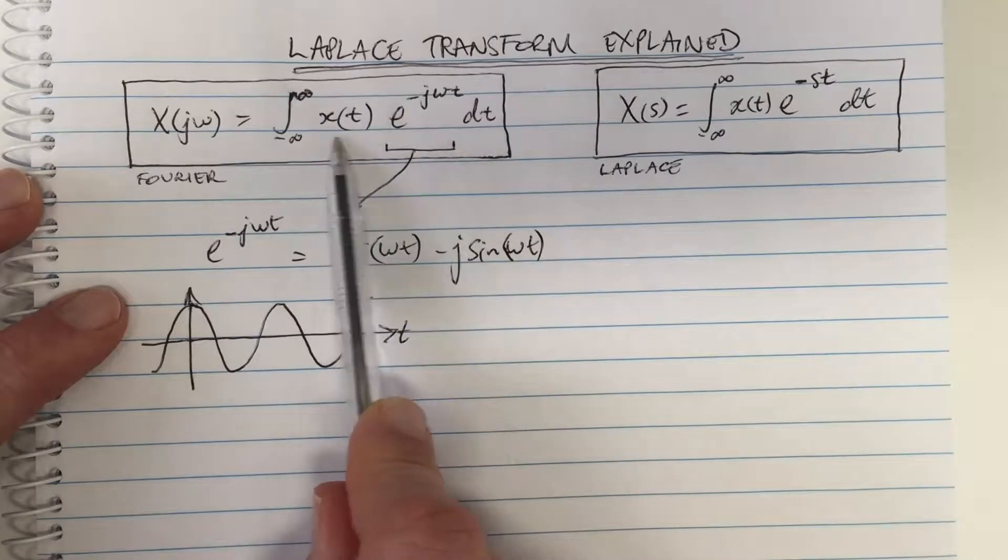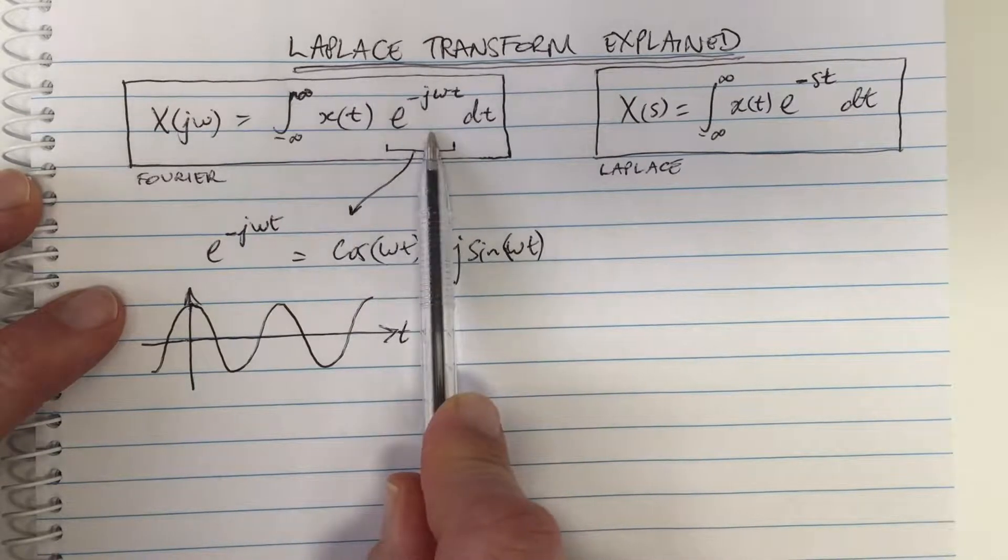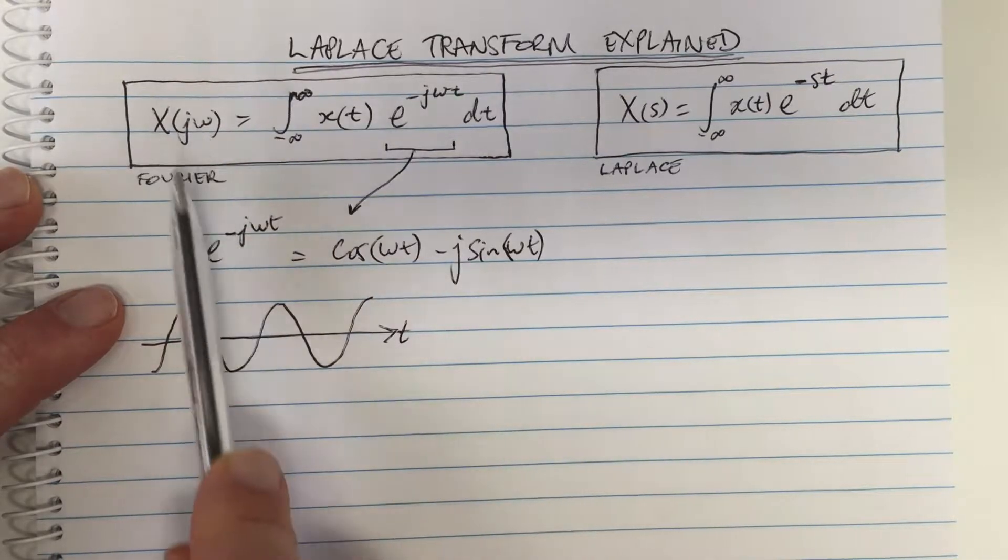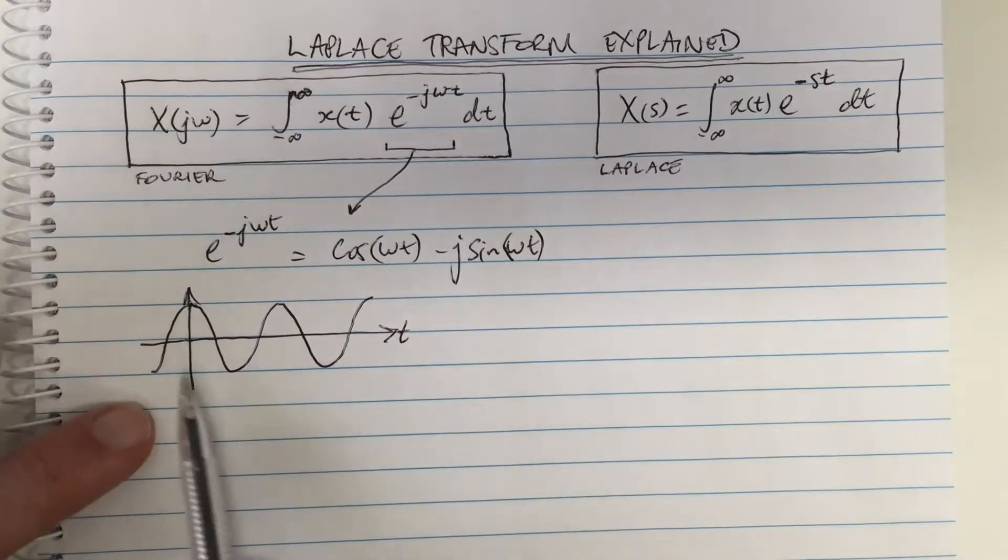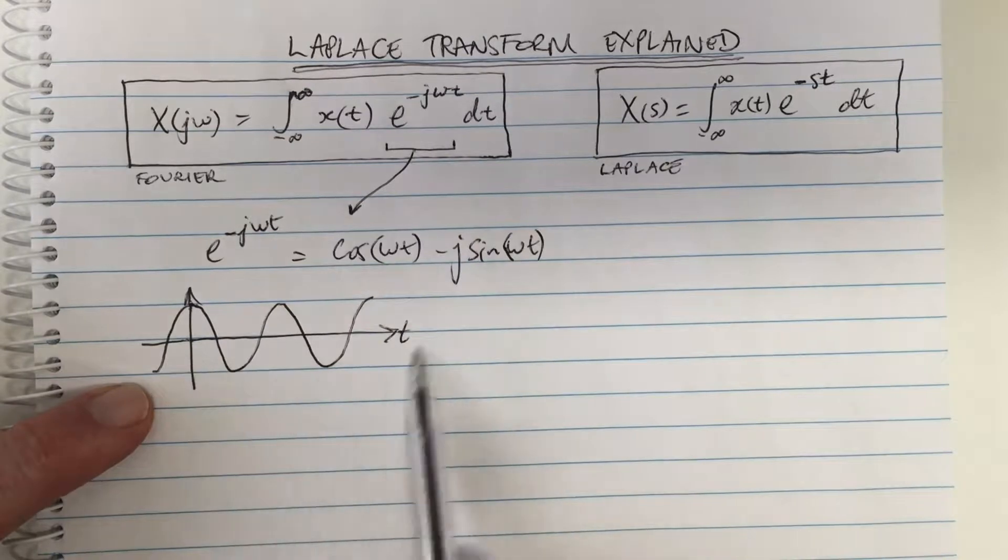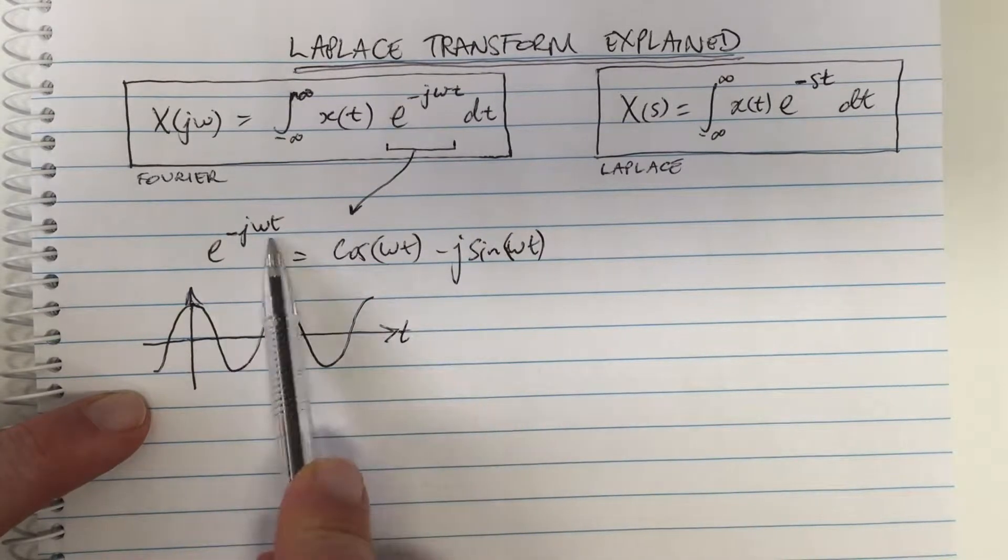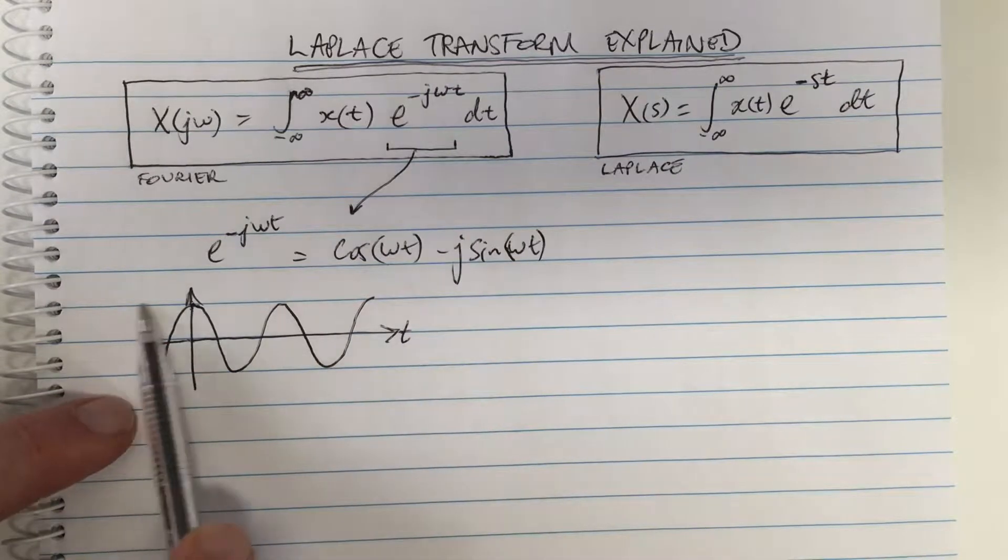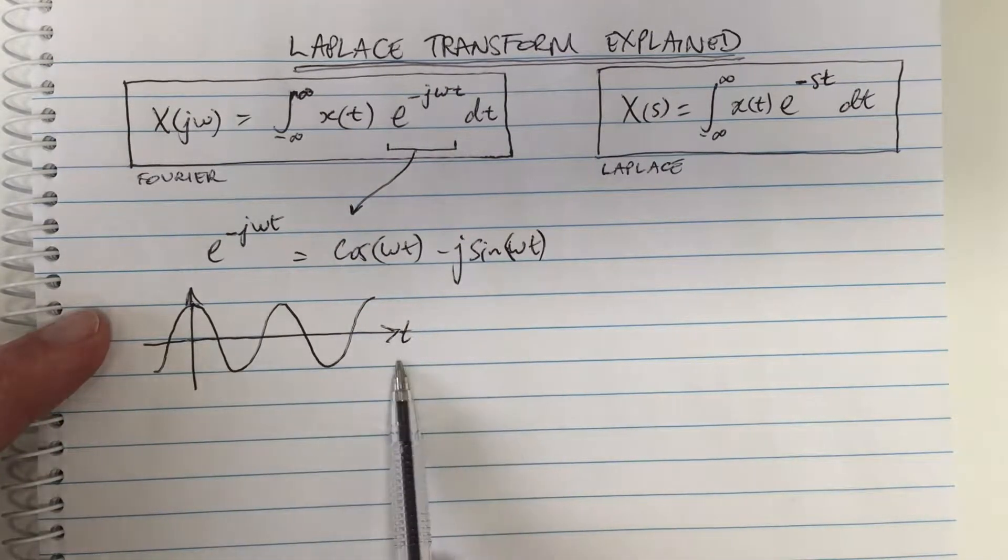Then you do it for all different basis functions—that's the Fourier transform. All of those basis functions look like this: they are all complex exponentials where the amplitude doesn't change with time.